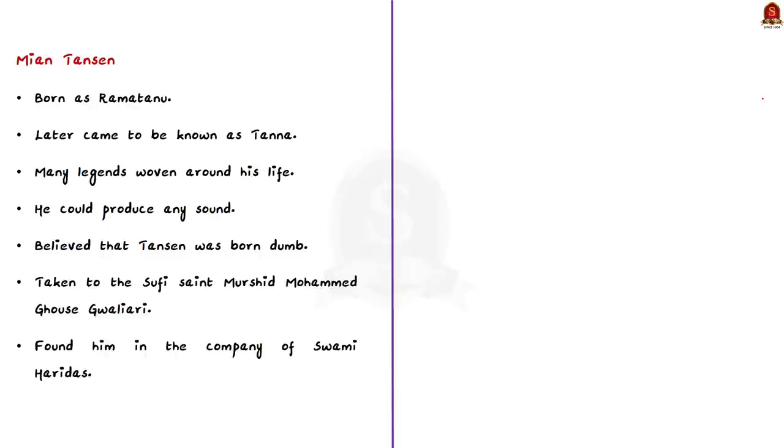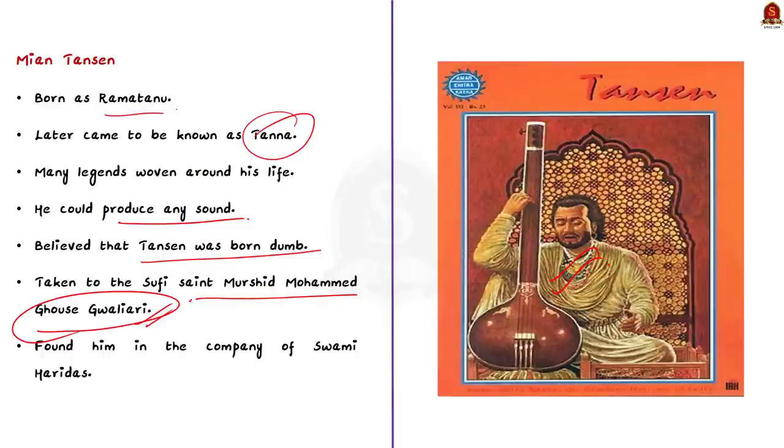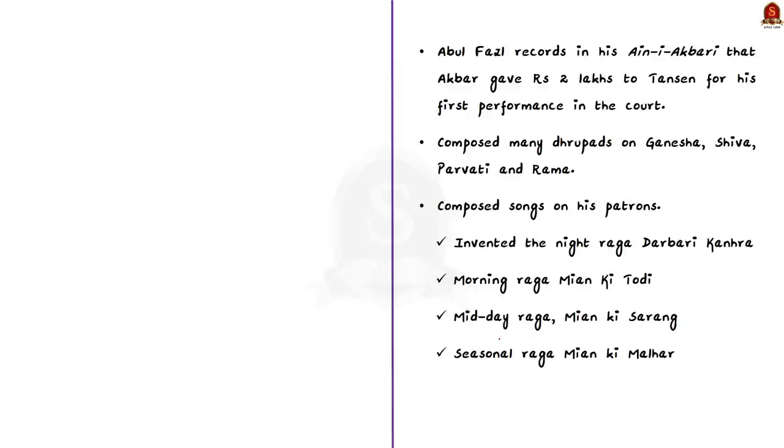In this news article, there is a huge paragraph dedicated to the titles given to Tansen alone. Coming back to Tansen, he was born as Ramatanu and later came to be known as Tanna. There are many legends around his life. It is said that he could produce any sound. The story goes that once when sadhus were crossing a field, they heard a lion's roar and located it to a young boy sitting on a tree. They advised his father to send him to Swami Haridas for training. However, it is believed that Tansen was born dumb and was taken to the Sufi saint Murshid Muhammad Gwalior. On reaching Gwalior, he visited the Sufi saint and found him in the company of Swami Haridas. The saint blew air into the mouth of the child and Tanna began to speak. When the saint came to know the child was also deaf, he blew air into his ears and he was cured. Thus began his musical journey.